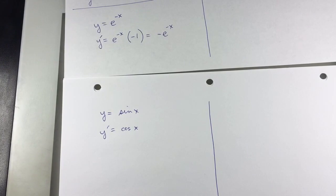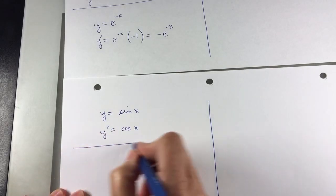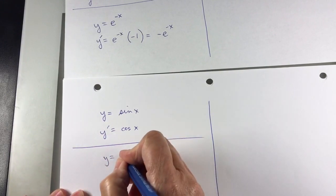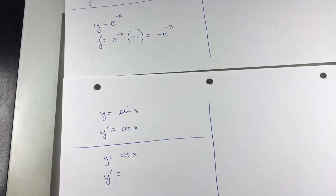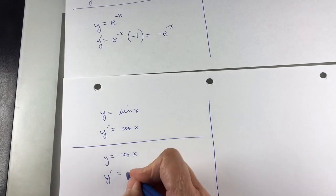Now, they came through for the derivative of cosine x. They said, well, they said, using the same method, if I have y equals cosine x, then y prime is negative sine x.